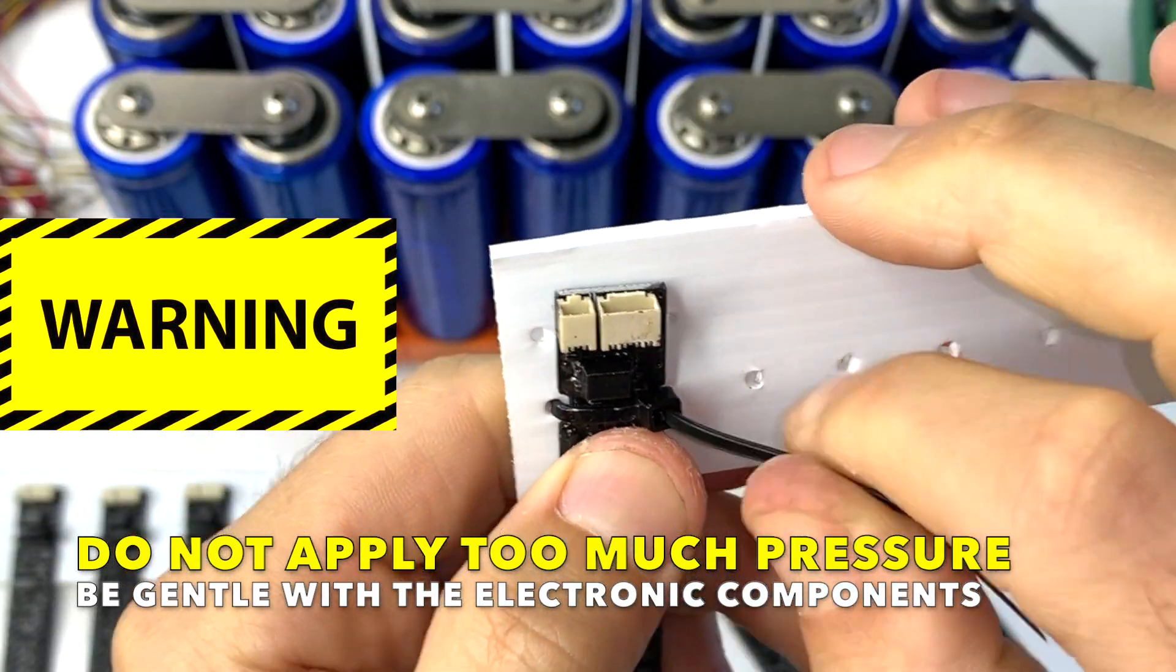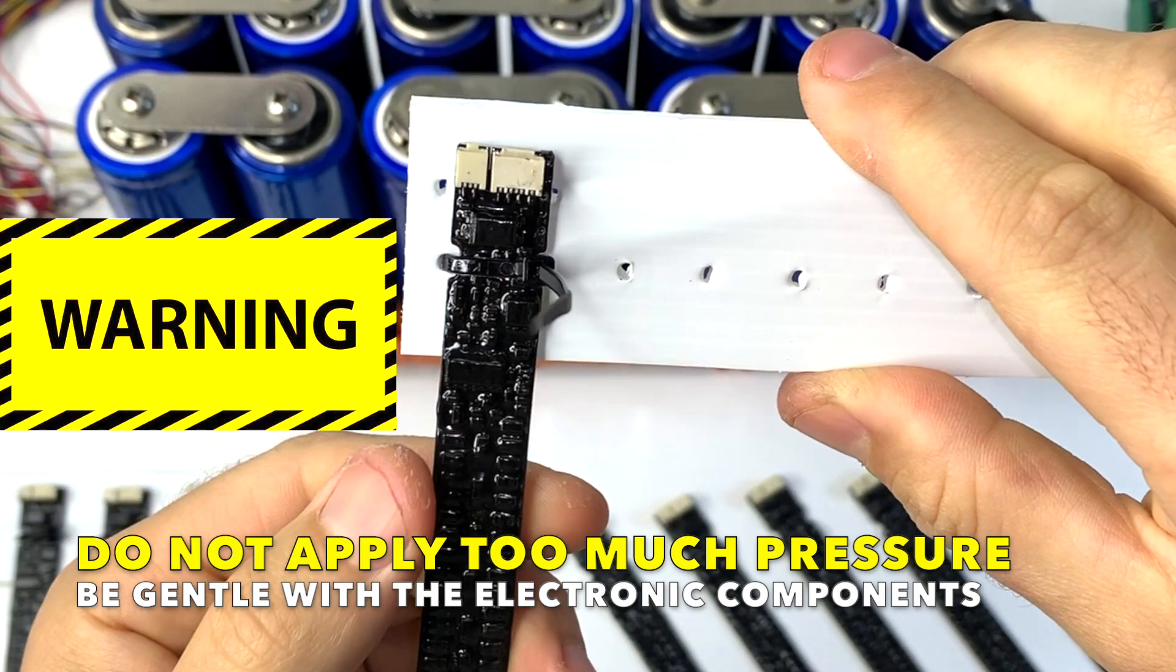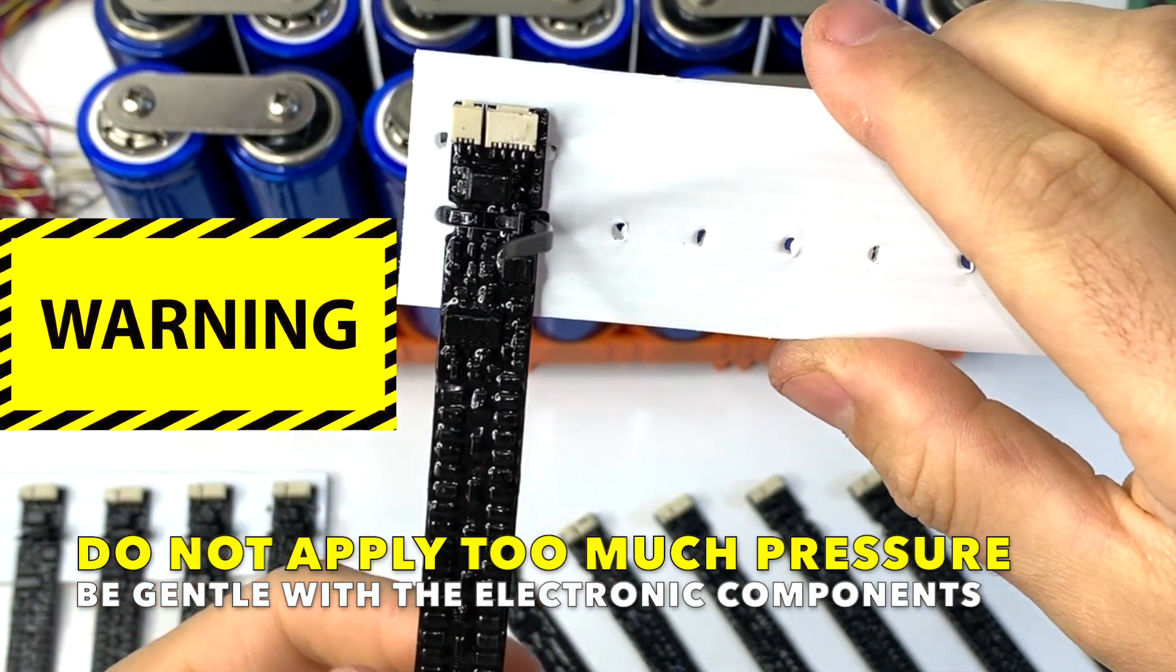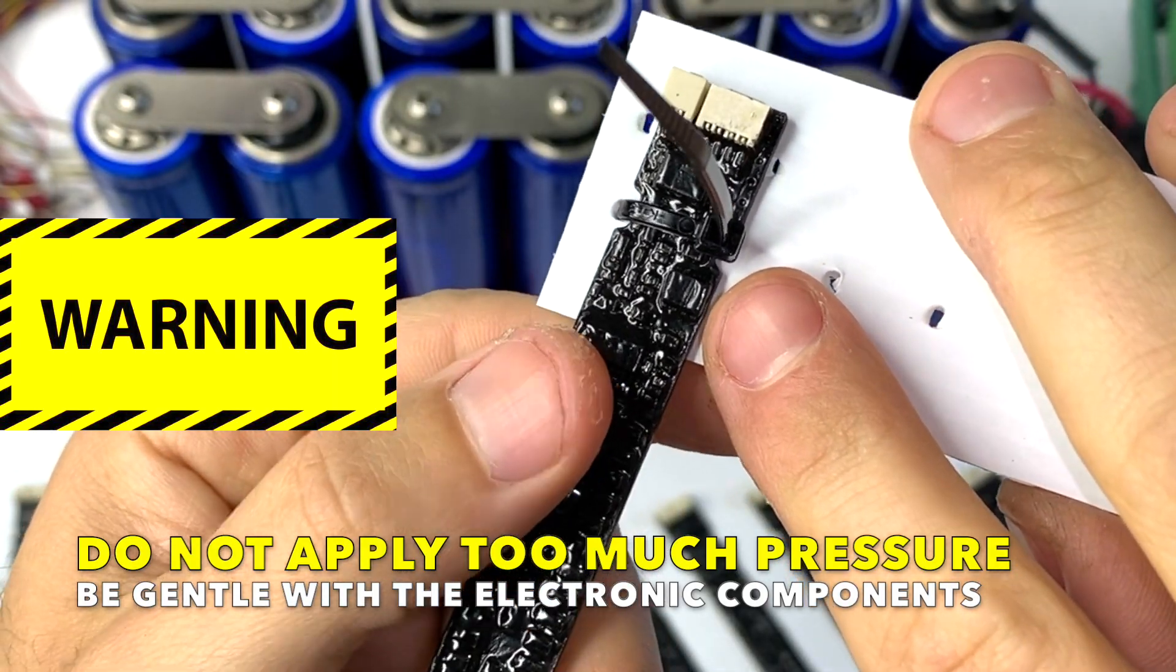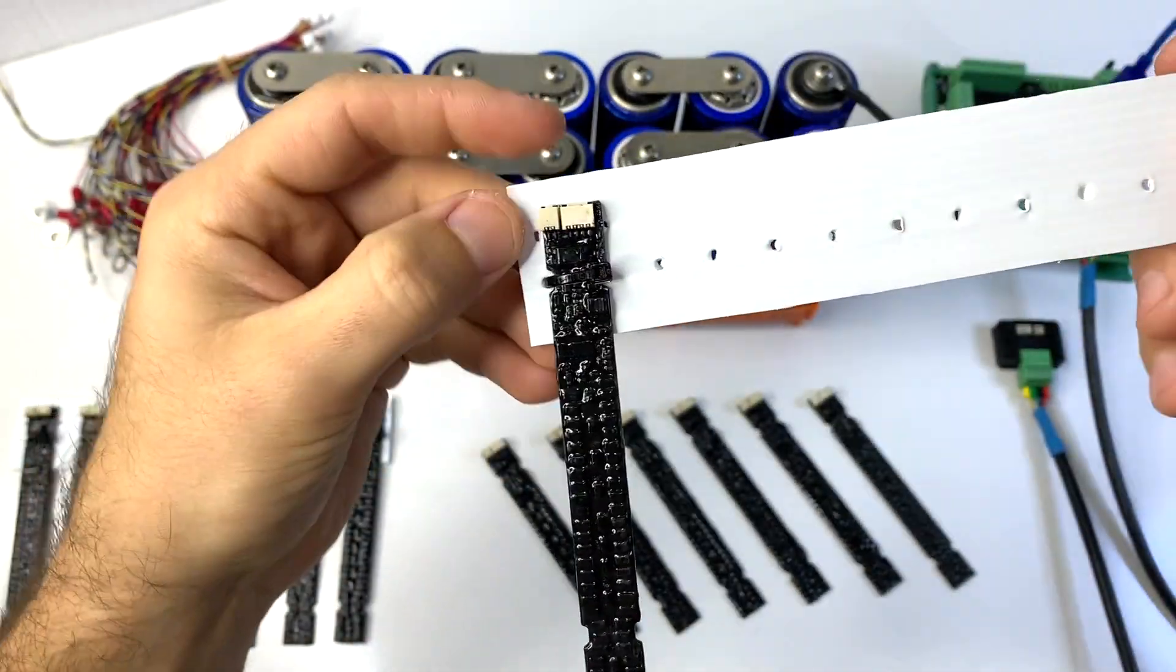Don't go too hard, just enough to lock it in place. You don't want to be crushing any components under the epoxy. Cut the extra cable tie, and then I'm going to do the same for all the cell monitors.